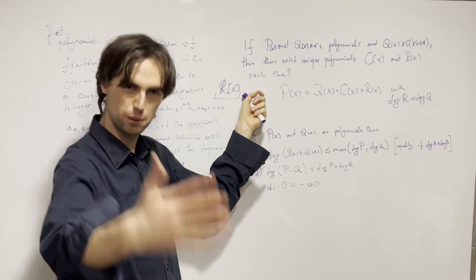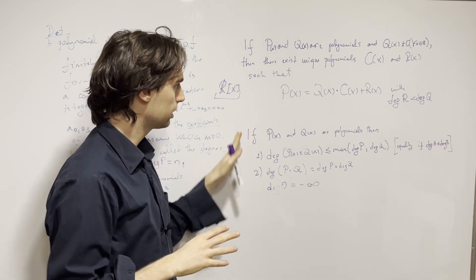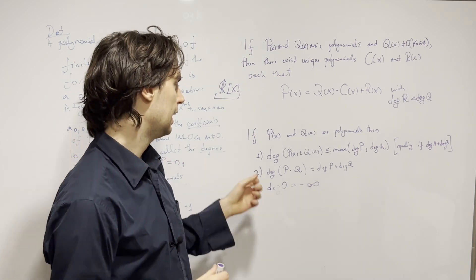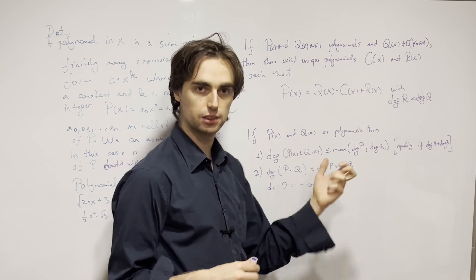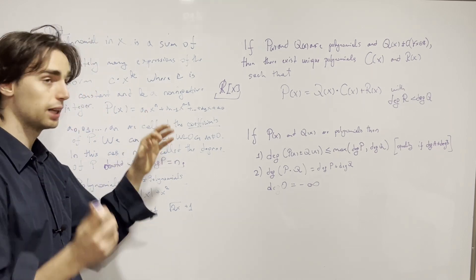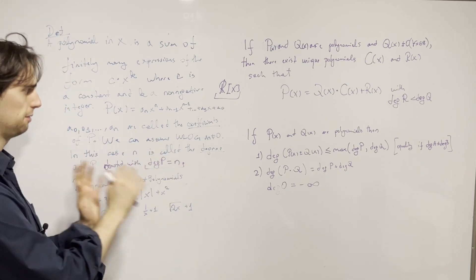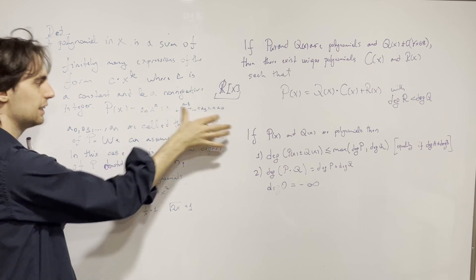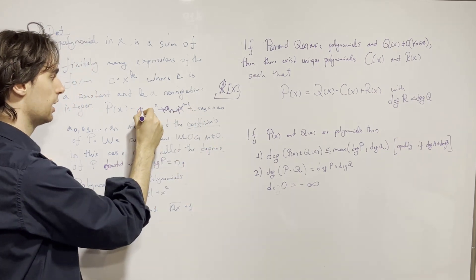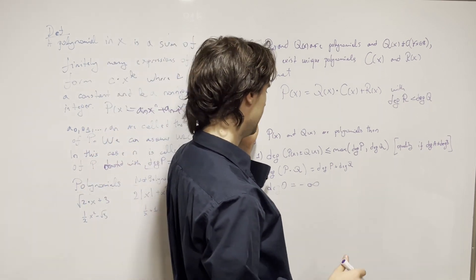We're going to prove this claim. This is the problem I'm inviting you to pause for about 20 minutes to an hour to try yourself. Before we go on, I want to make clear the degree rules. The first rule is that the degree of a sum or difference is less than or equal to the larger of the two degrees — because the leading coefficients of p and q can cancel out.